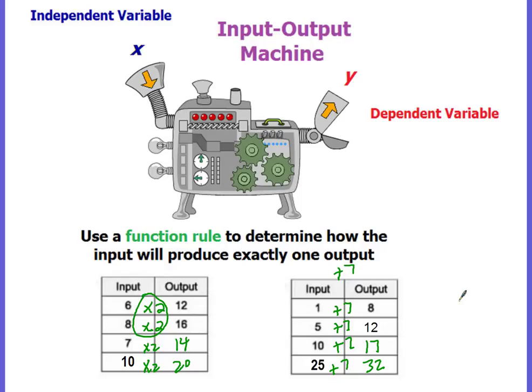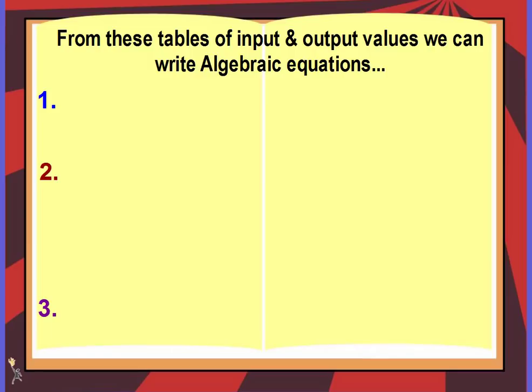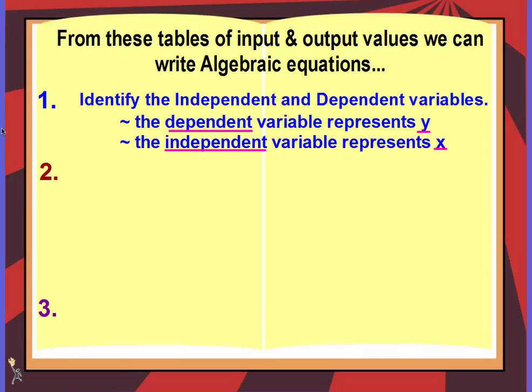So this is what you did in elementary school, and we're going to build upon it. From these tables of input and output values, we can write algebraic equations. Step 1: identify the independent and dependent variables. Not every time will you be given x or y — sometimes you'll be given situations or different variables like m and p, and you'll have to determine which is independent and which is dependent.